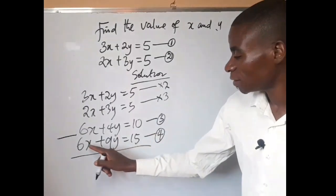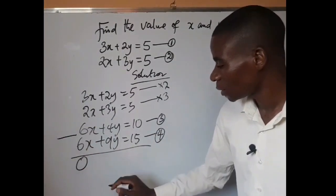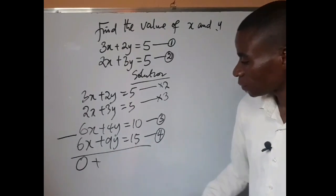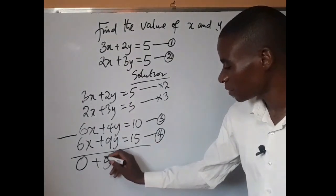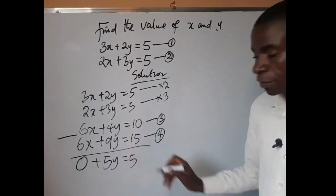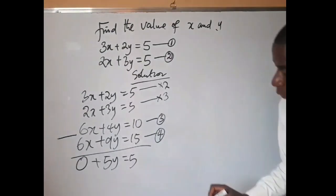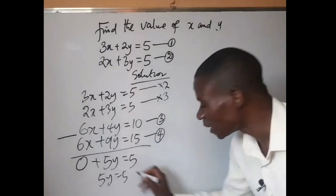Now it should be 6 minus 6, we have 0. Plus 9 minus 4, we have 5y. Equals 15 minus 10, we have 5.